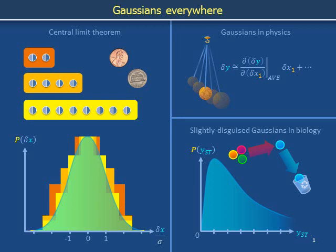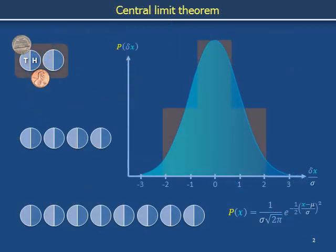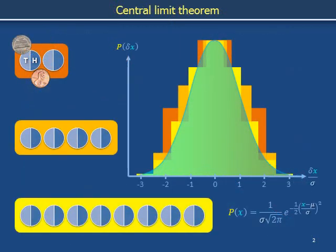We recall that the central limit theorem states that if one is studying a random variable itself the sum of a large number of independent random processes, with no small number of these processes dominating the fluctuations of the overall sum, then the random variable of interest can be described by a Gaussian or so-called normal probability distribution.